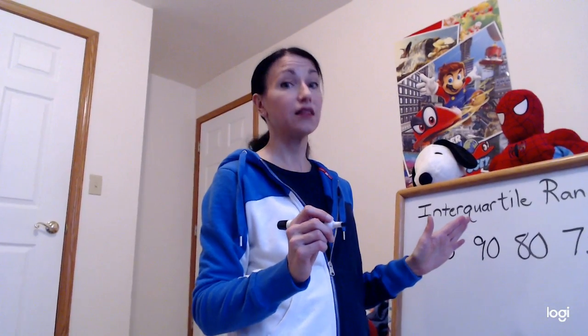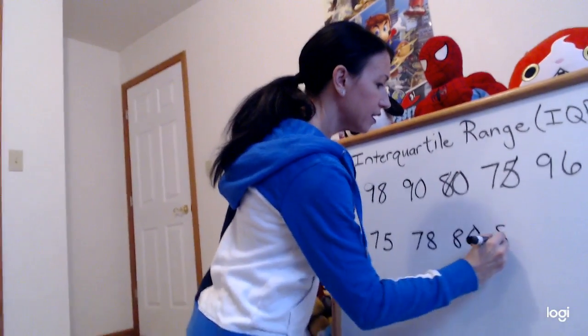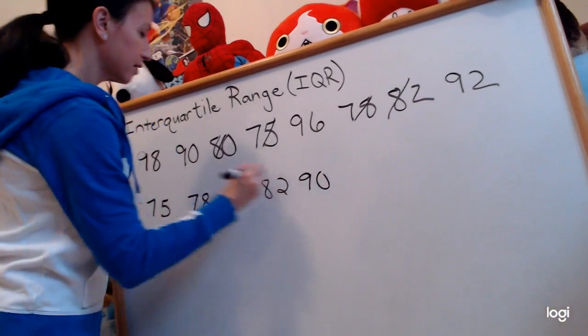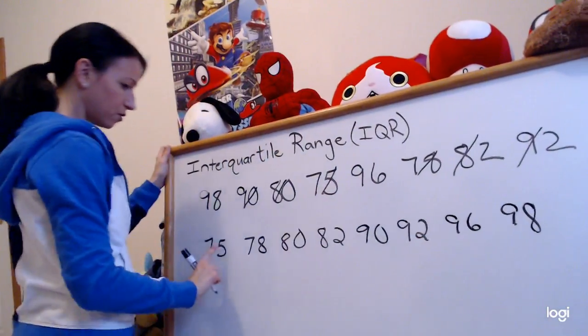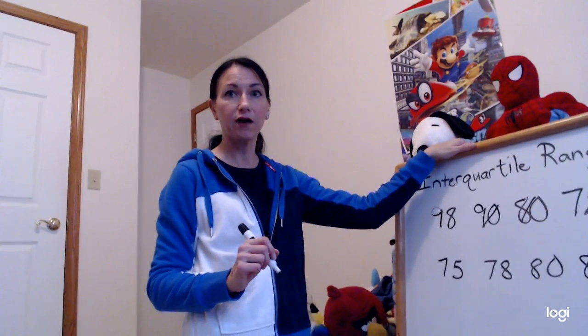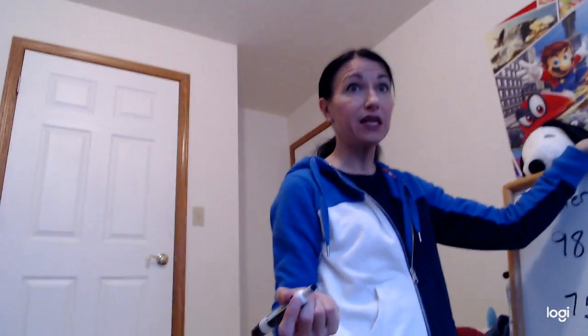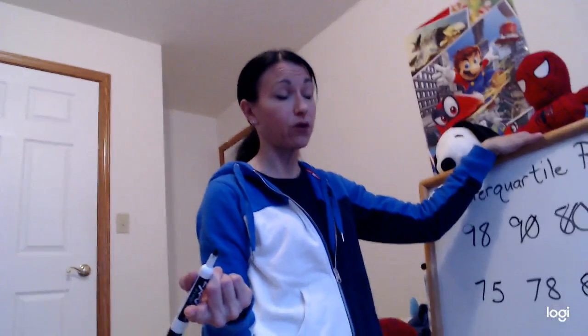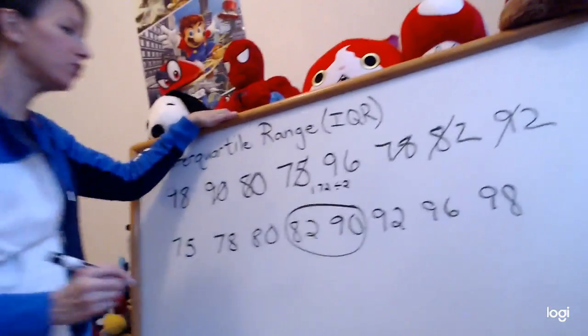The first thing we do is line them up least to greatest: 75, 78, 80, 82, 90, 92, 96, 98 — one through eight, got them. Now I need to find what's in the middle. This time I have two numbers in the middle. I don't actually have to find the median when finding IQR, but if I wanted to: 82 plus 90 is 172, divided by two would be 86.